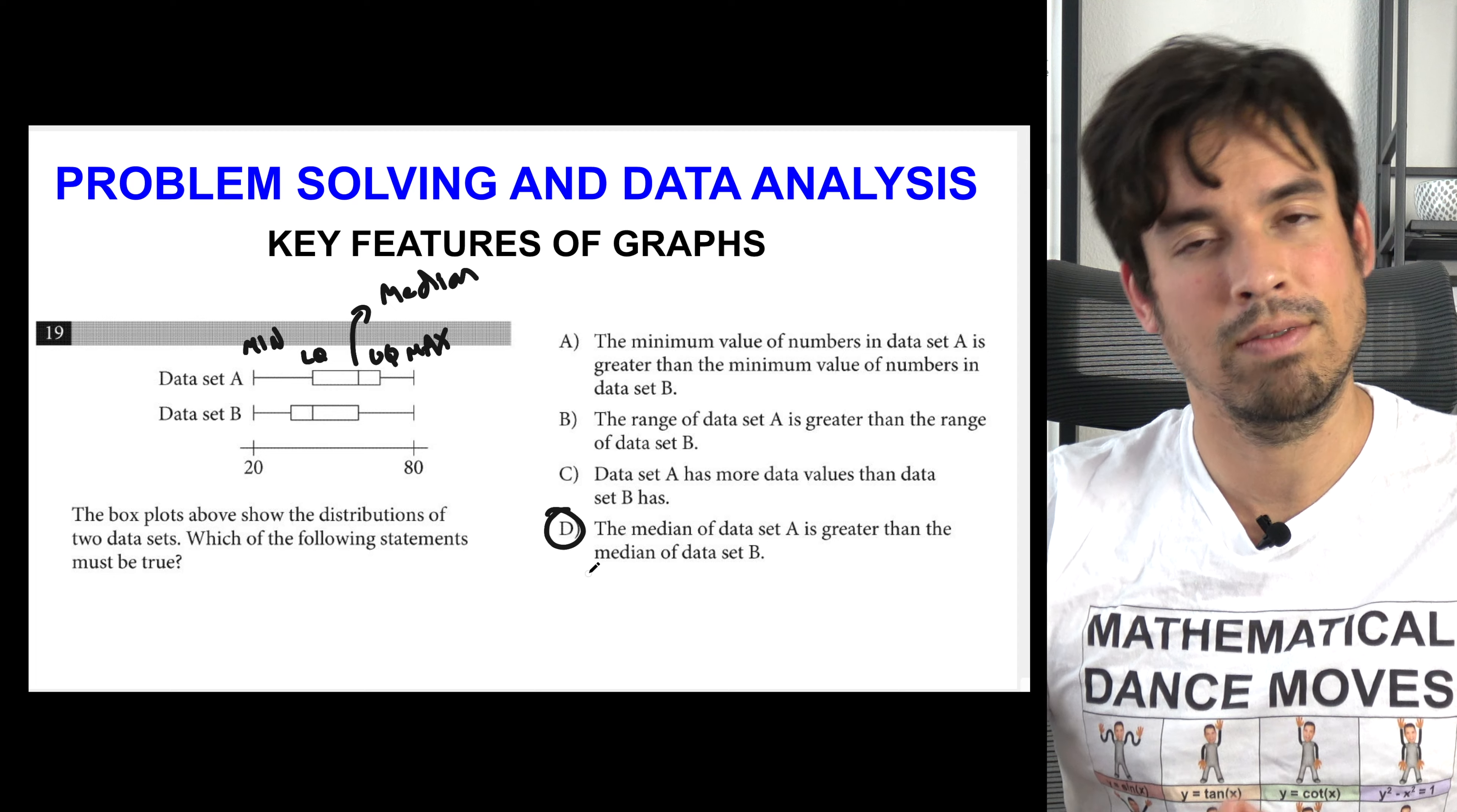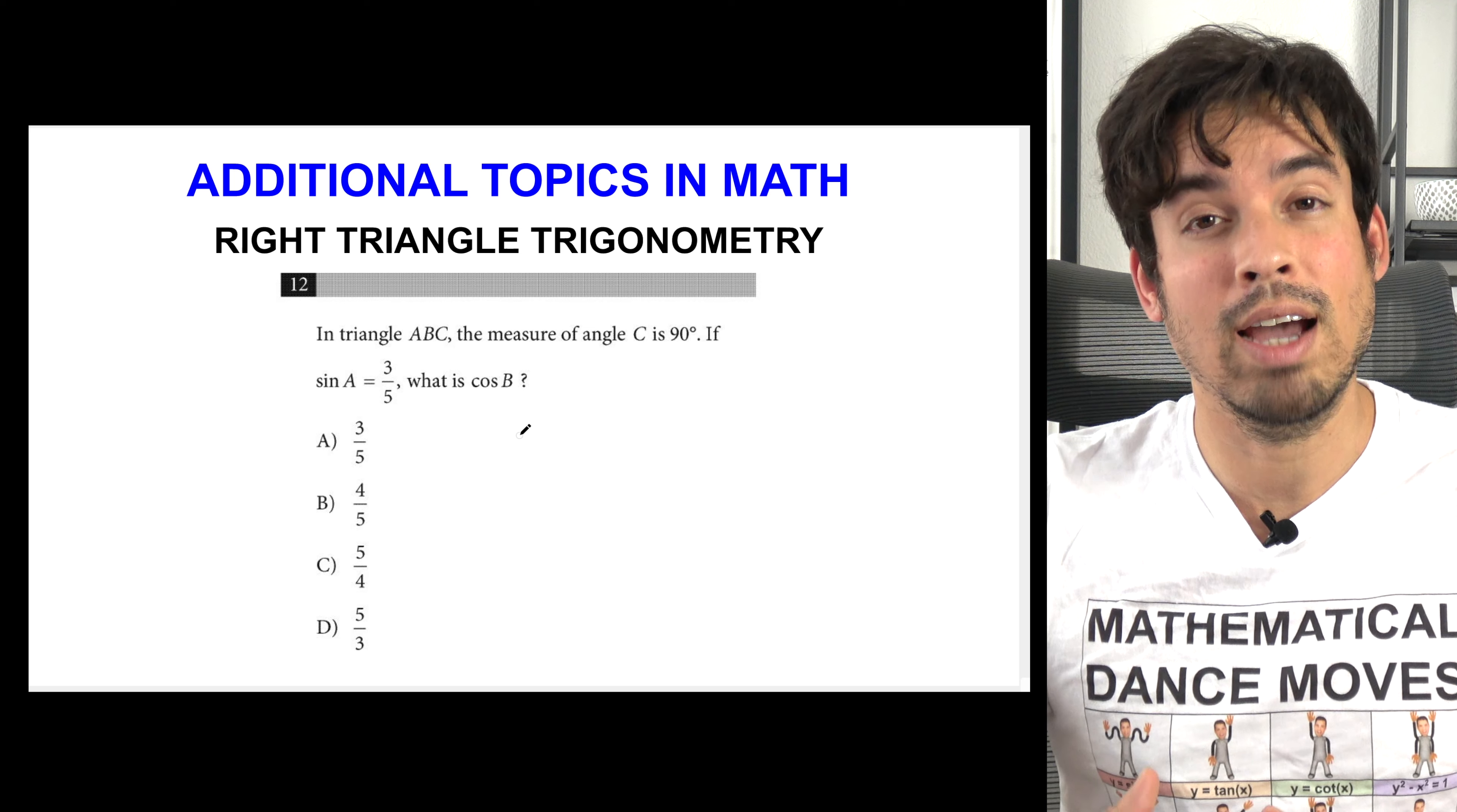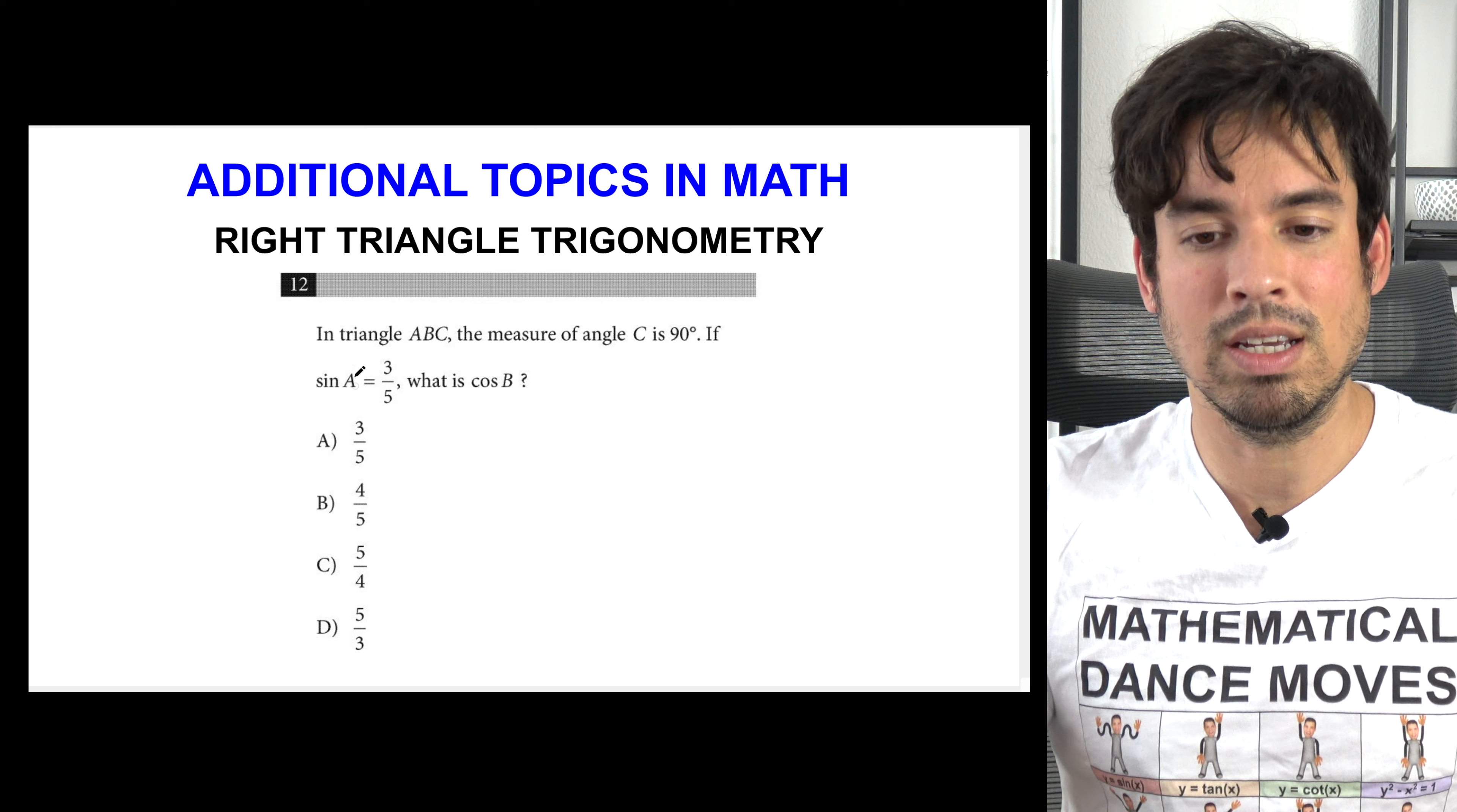In this one it says in triangle ABC the measure of angle C is 90. If sine of A equals three-fifths, what is cosine of B? Again, normally you might want to draw a triangle out, really calculate cosine of B according to the side lengths that you choose. But you don't have to and this is where the College Board is trying to help you. They always test this concept and here's the answer: sine of an angle equals cosine of its complement. Since these guys are the non-right angles in a right triangle, A and B must be complements. Therefore cosine of B is also three-fifths. Boom, done.